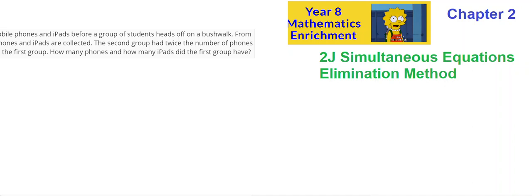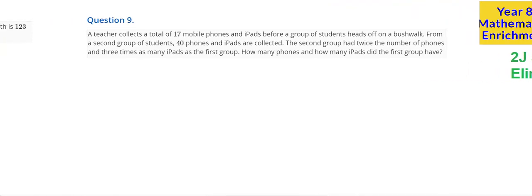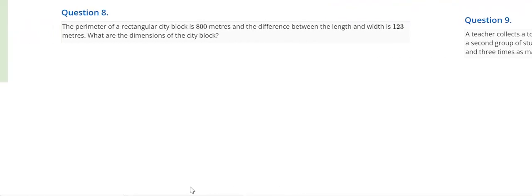So this is 2J, question from problem solving, question 8 and question 9. So in question 8, the perimeter of a rectangular city block is 800 metres.